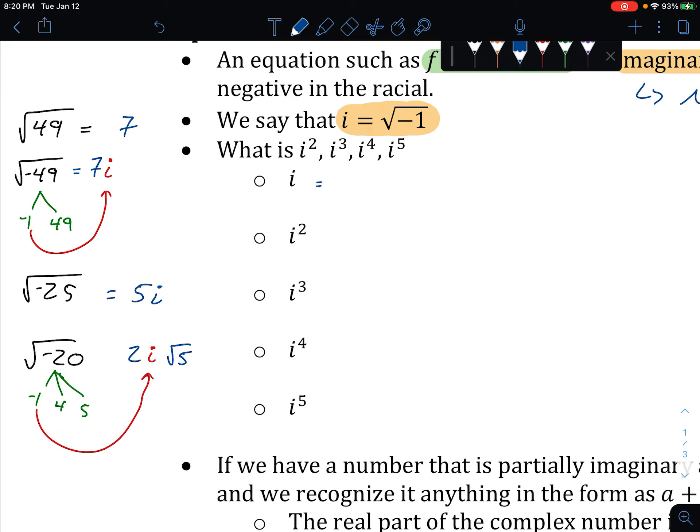Now we'll move to some cool patterns that occur with i. We know i is equal to the square root of negative 1. That's a property we're going to have to have memorized and always know.